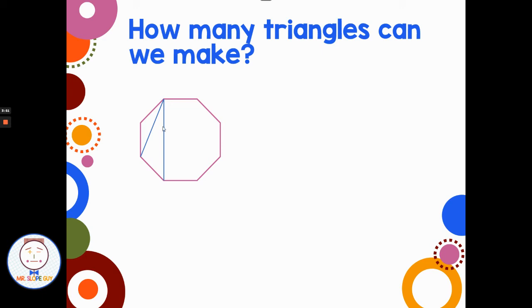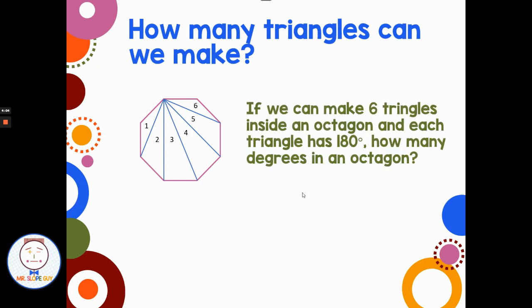Well, I think I'll just keep going from the same spot. I can go to there, I can go to there, and there. So how many triangles do we have inside this octagon? Well, 1, 2, 3, 4, 5, 6 triangles. So we can make 6 triangles inside an octagon, and each of those triangles we know has 180 degrees.